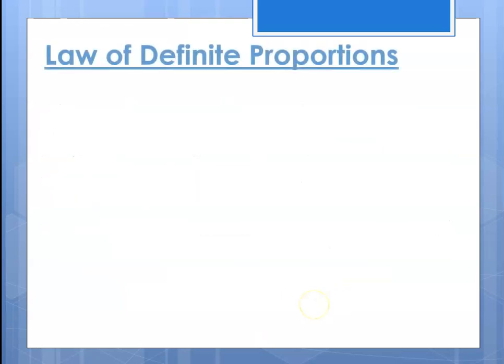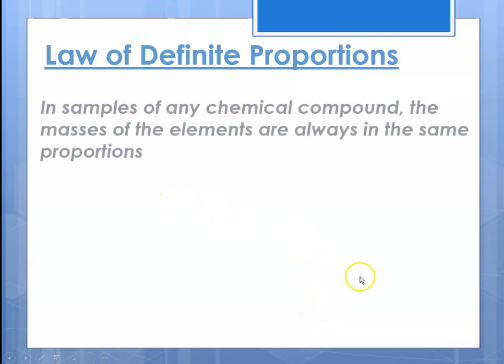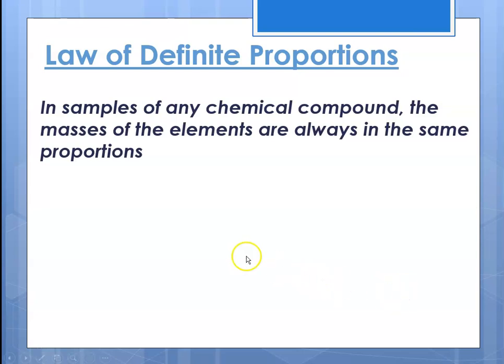Ionic compounds exist as a collection of positively and negatively charged ions arranged in repeating three-dimensional patterns. We need to talk about a couple of laws. The law of definite proportions says that in samples of any chemical compound, the masses of the elements are always in the same proportion.